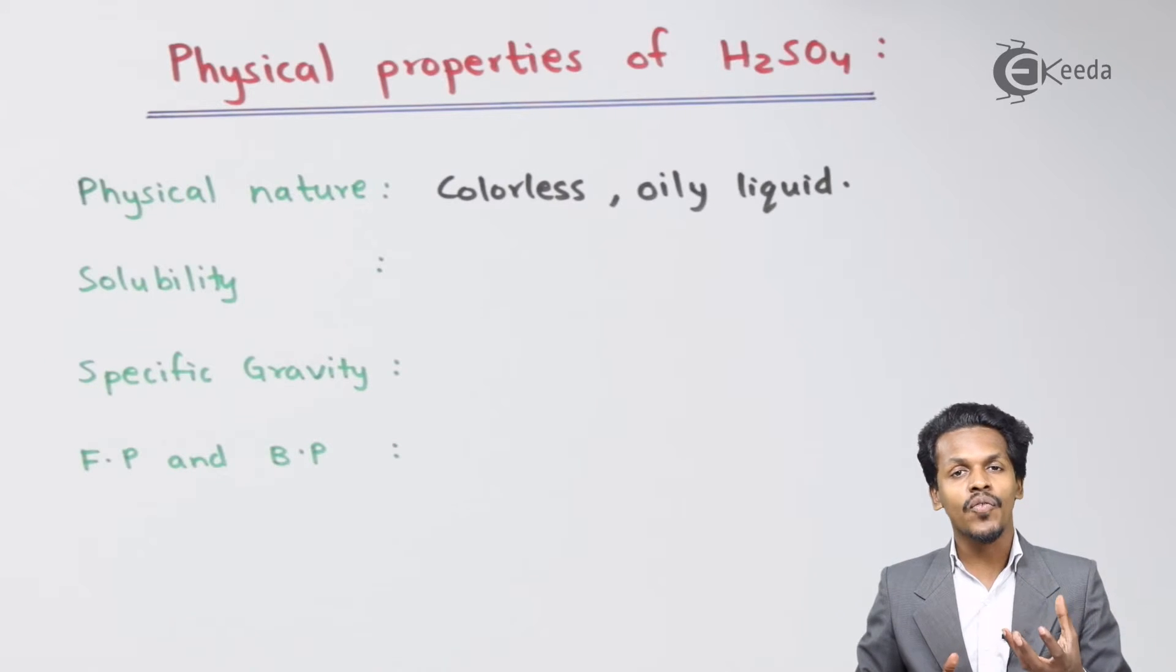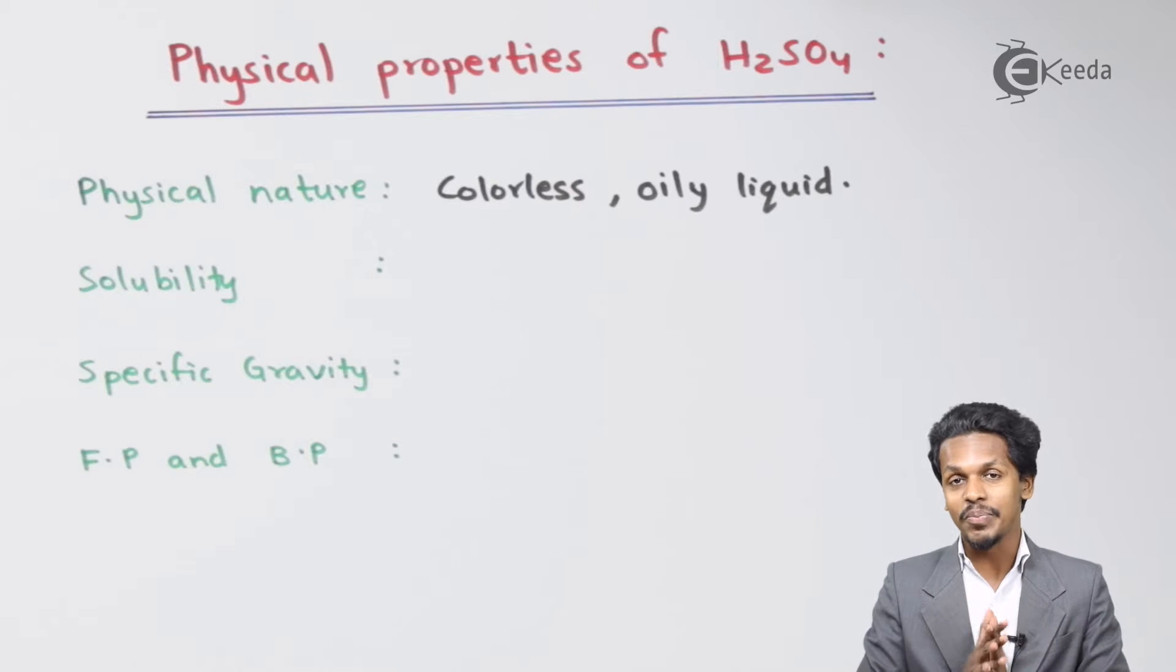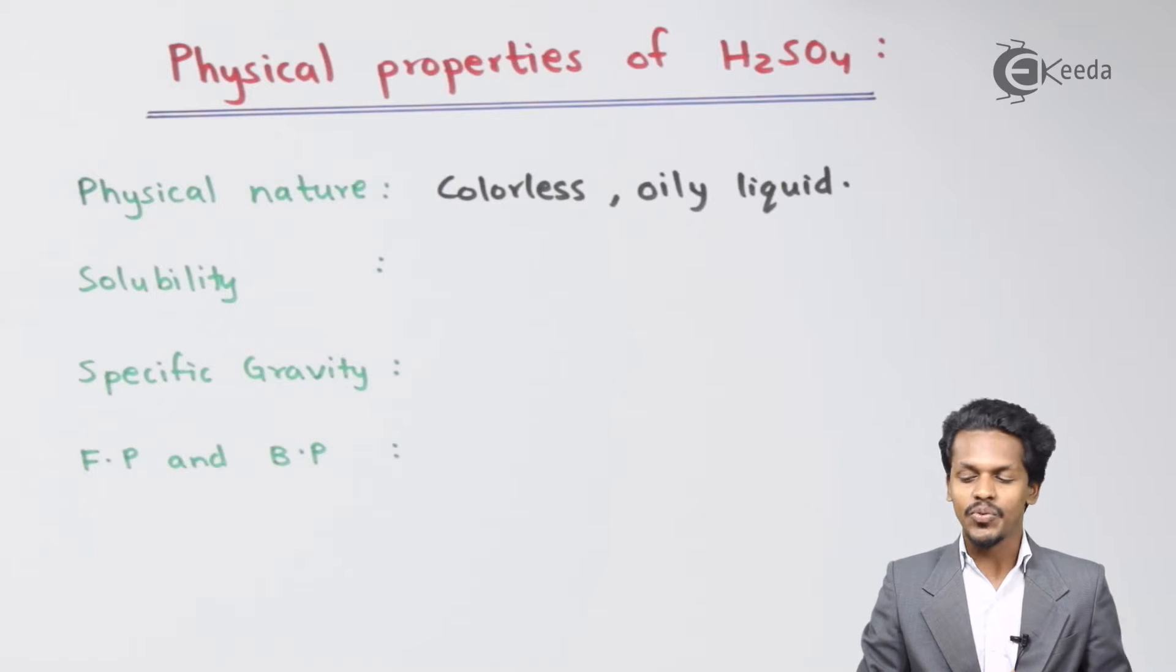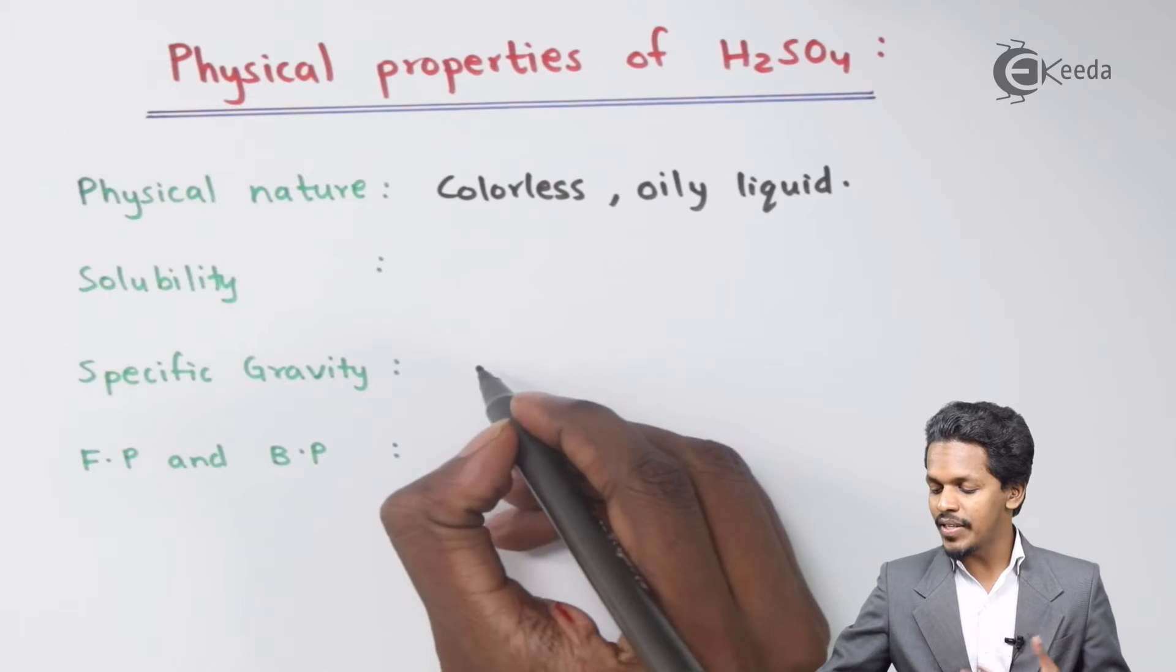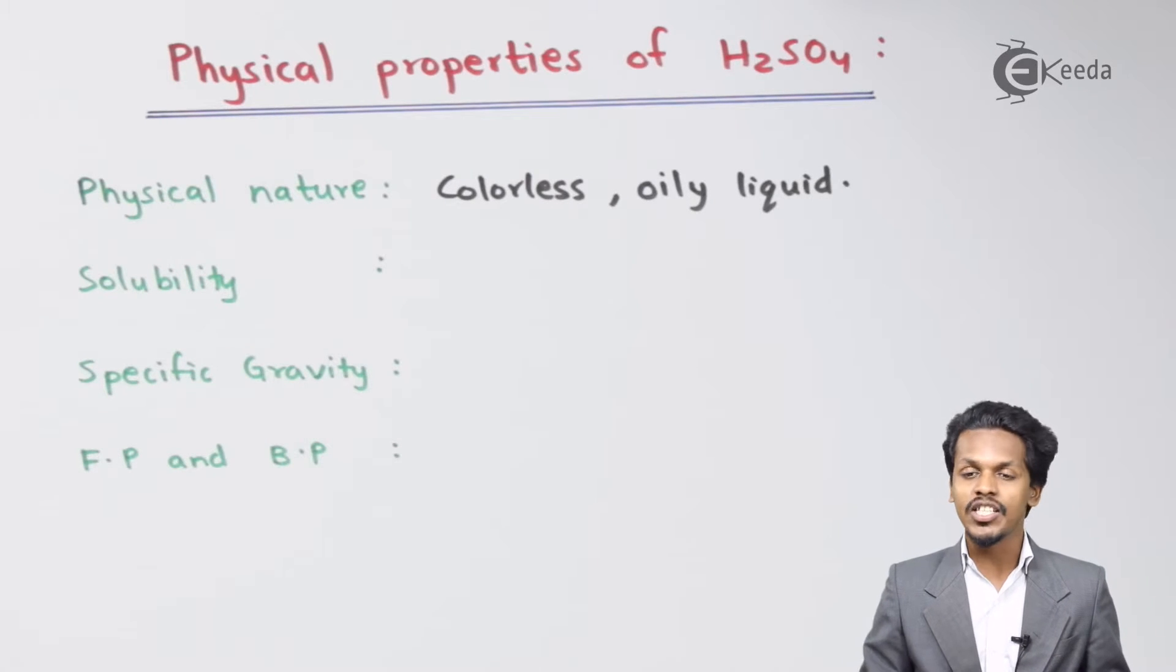Talking about the next one, specific gravity, it has been found that the specific gravity of H2SO4 is 1.86 at 298 kelvin, which is in fact very much dense.